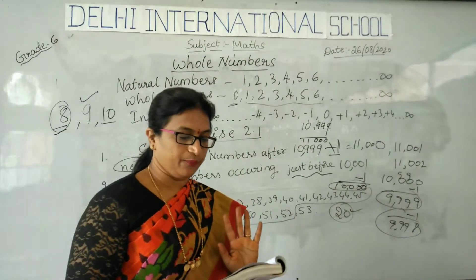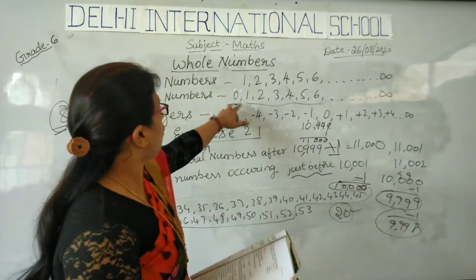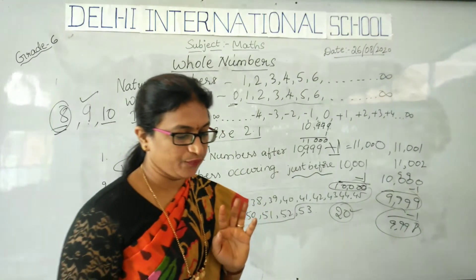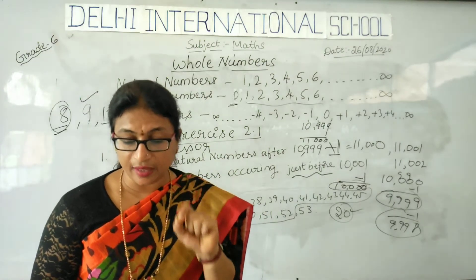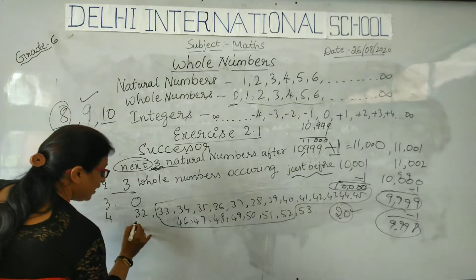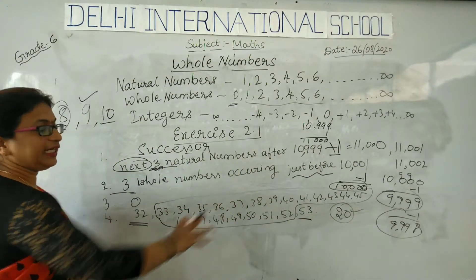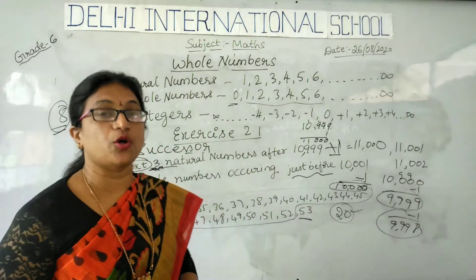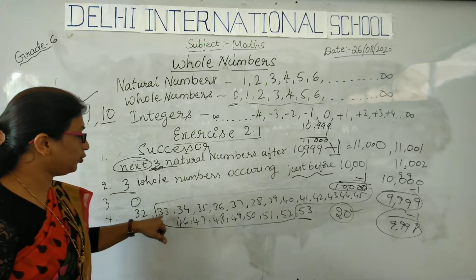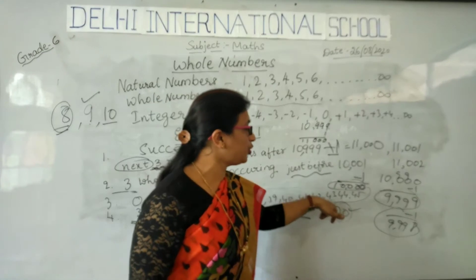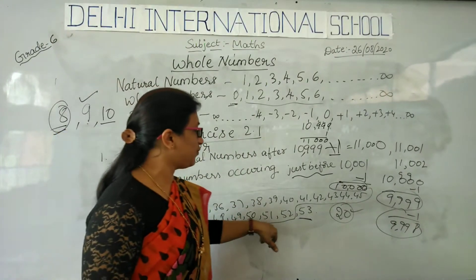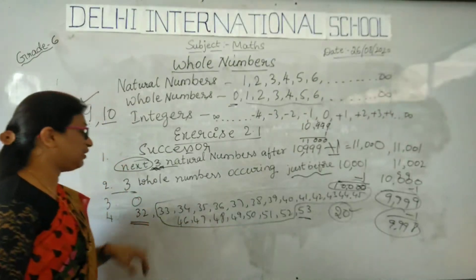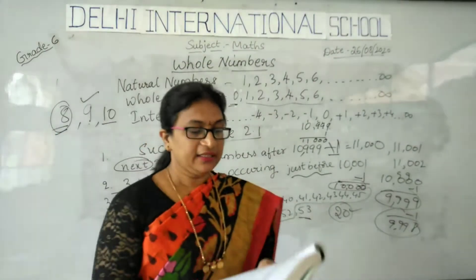The third problem: which is the smallest whole number? The smallest whole number is 0 only, so 0 is the answer. The fourth problem: how many whole numbers are there between 32 and 53? Between means we should not count 32 or 53 — only the numbers in between. After 32 we have 33, 34, 35... up to 52, and then 53 is the last. So there are about 20 numbers between 32 and 53.